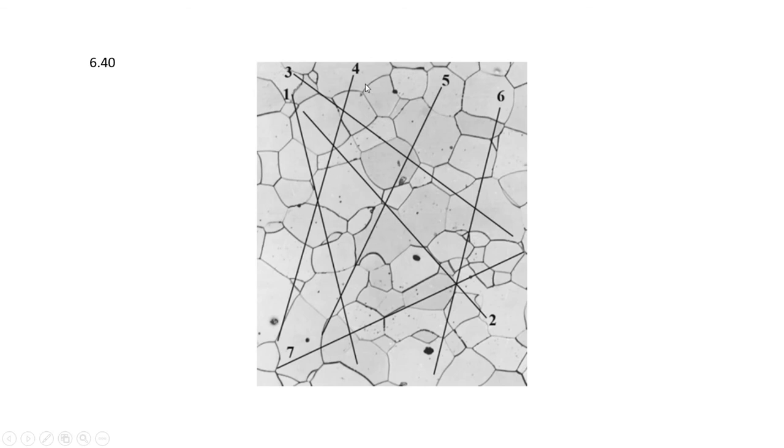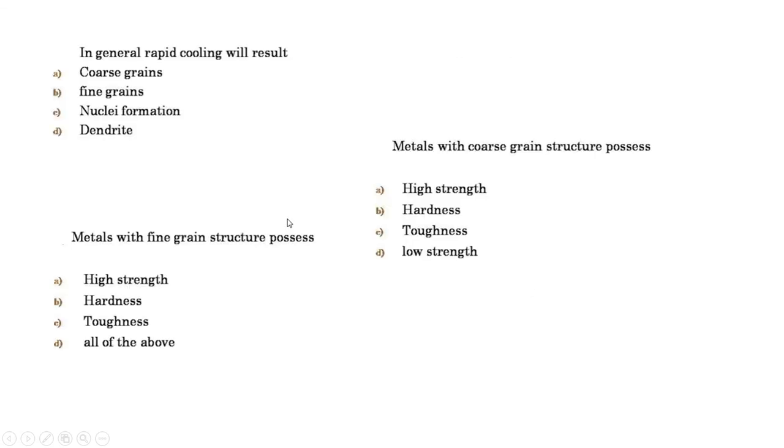In class, we will work on examples of finding grain size based on arbitrary lines, one method, and also based on the one described by ASTM in one inch squared of an image of the microstructure. At the end of this chapter, it's good to go and review some questions like these ones, and we can discuss them more in the class. Thank you.